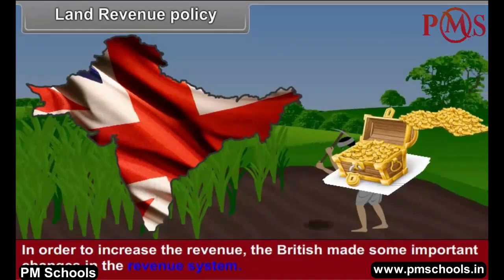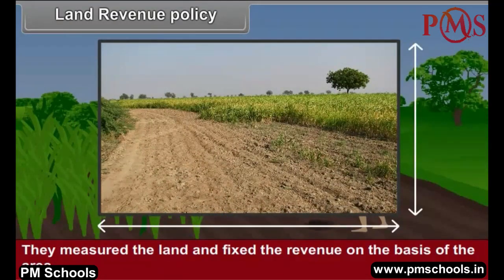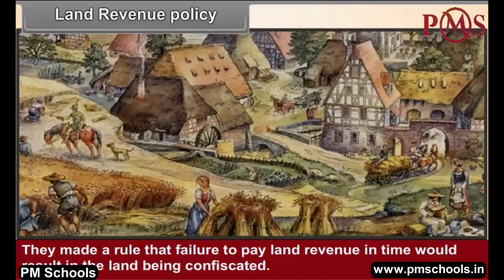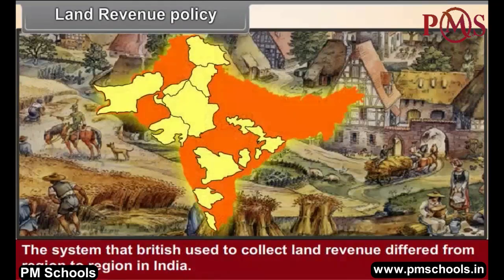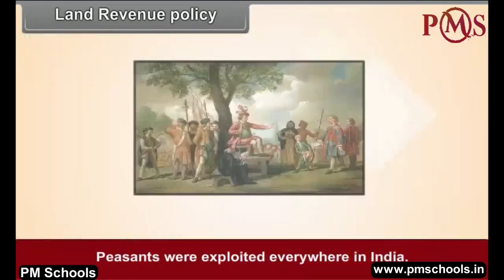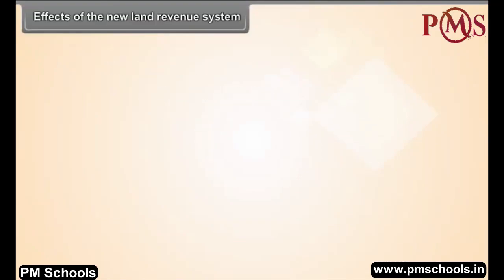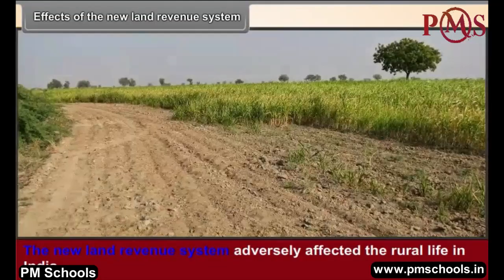In order to increase revenue, the British made important changes in the revenue system. They measured the land and fixed the revenue on the basis of area, making it compulsory for peasants to pay land revenue in cash at a fixed time. Failure to pay in time would result in the land being confiscated. The system differed from region to region, but peasants were exploited everywhere in India.